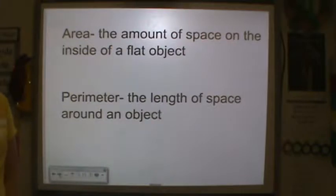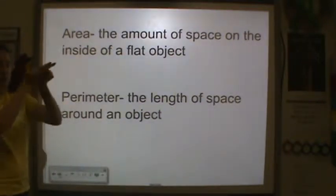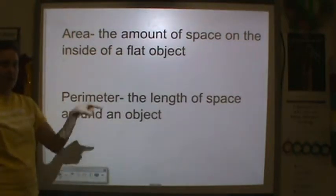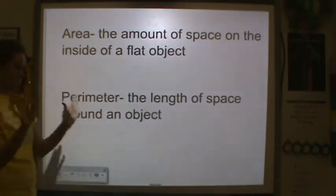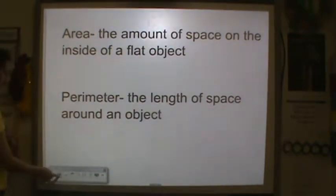So again, area is the amount of space on the inside of a flat object. And perimeter, which was lesson one, is the length of space around an object. So perimeter is around, area's in the middle. We're going to talk about area today more specifically.